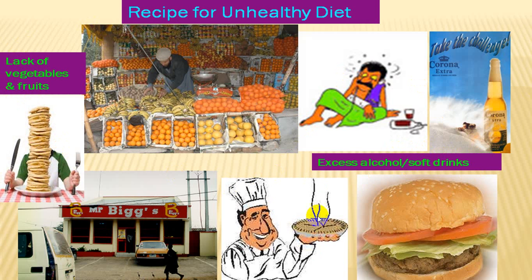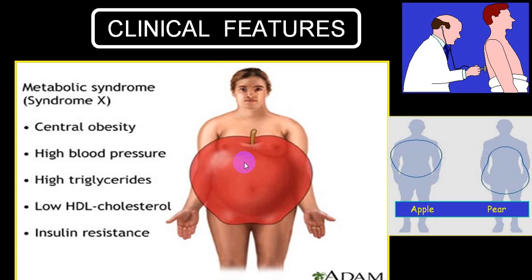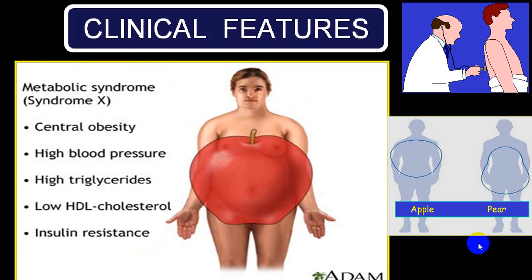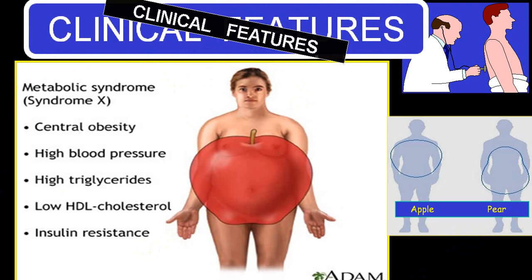The clinical features of metabolic syndrome include central obesity, hypertension, hypertriglyceridemia, low HDL, and insulin resistance, with abnormal IGT or IFG or the person being diabetic. When all these features are present together, we label it as metabolic syndrome or syndrome X.